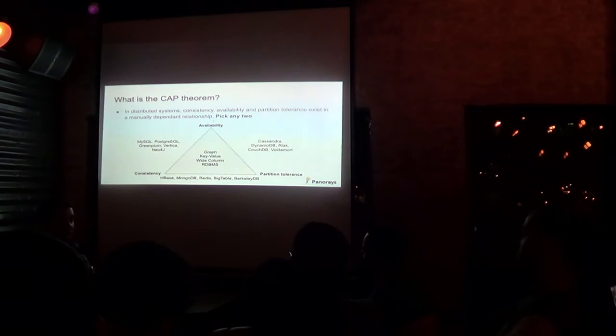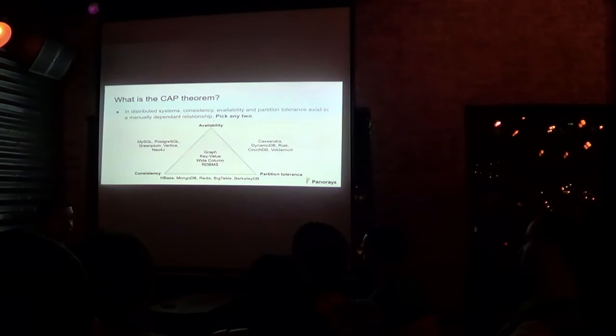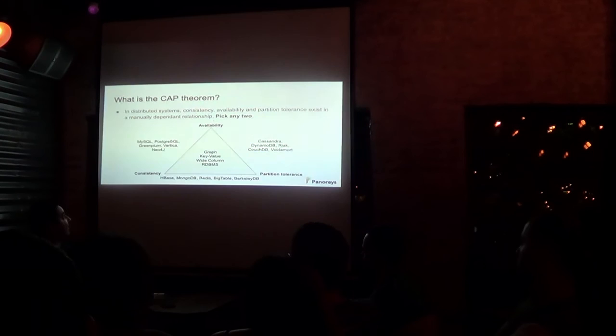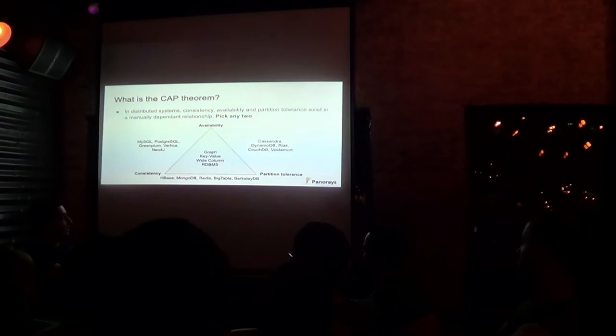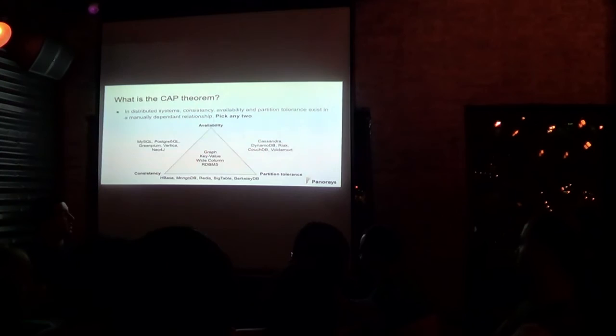The key factors around these things are consistency, availability, and partition tolerance — the CAP theorem. Availability means the data should be available at all times. Consistency means it should be consistent over all nodes. Partition tolerance is what happens when data is sharded across nodes. We can't have all three — each database gives you two out of the three. We have ones that give you availability and partition tolerance: Cassandra, DynamoDB, Riak, CouchDB, and Voldemort.